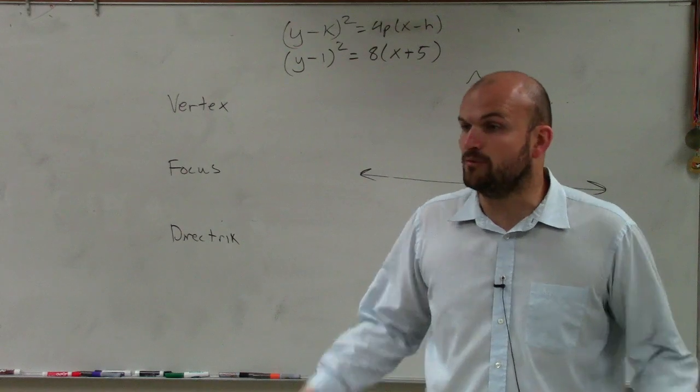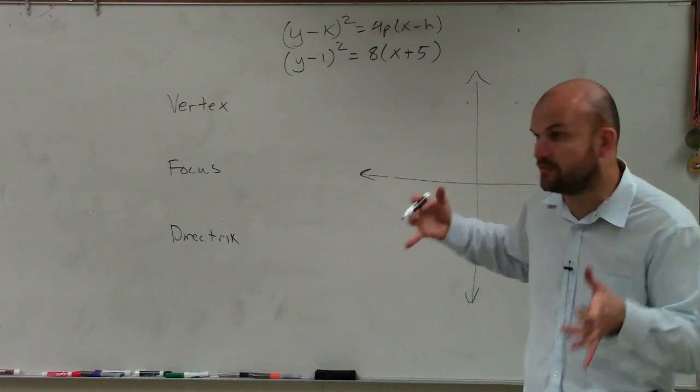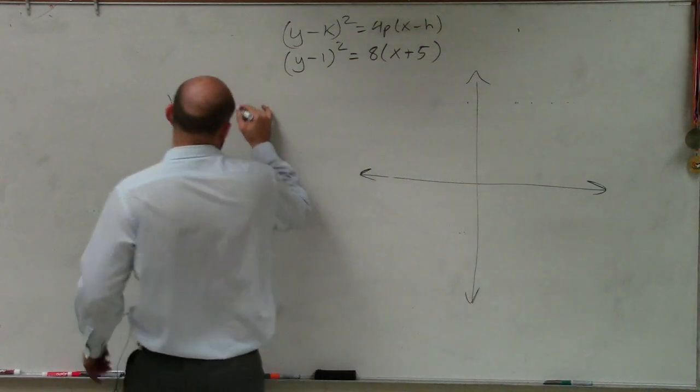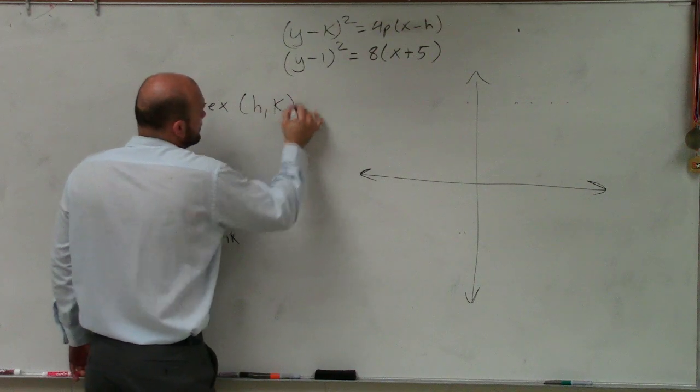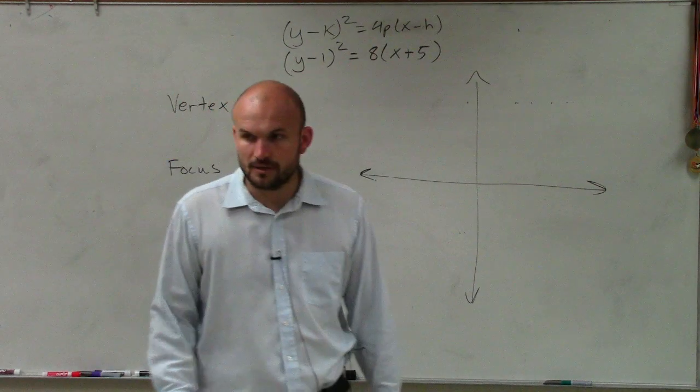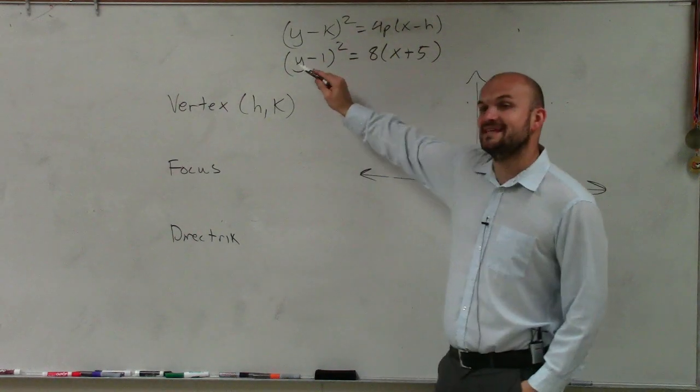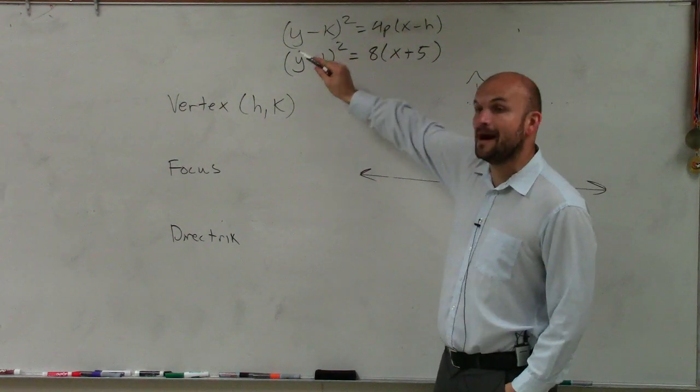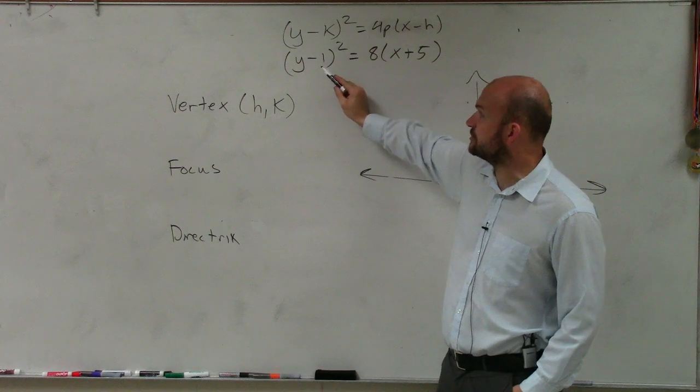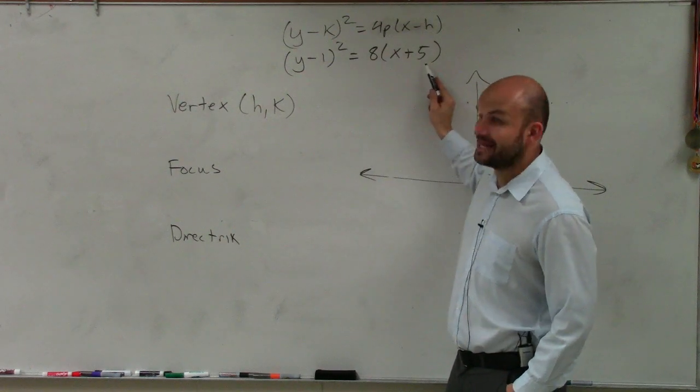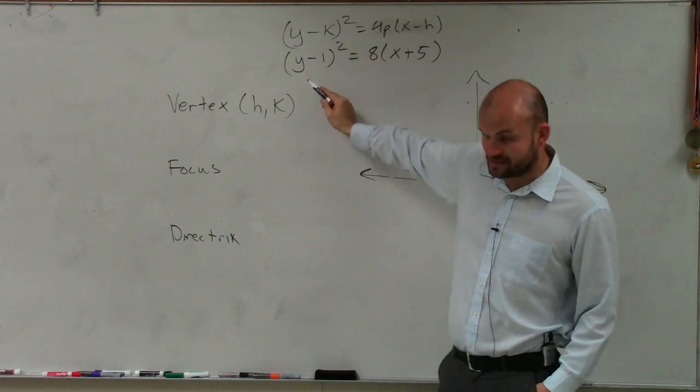Now the next thing is I need to determine what is my vertex. The vertex, if you guys remember, is (h, k). So we go to k, which remember, it's opposite. So my vertex is actually going to be (-5, 1).